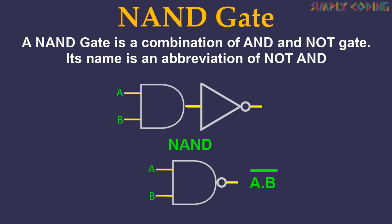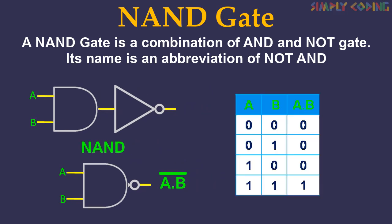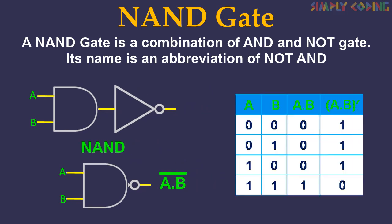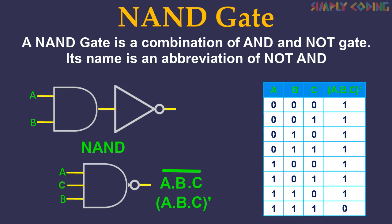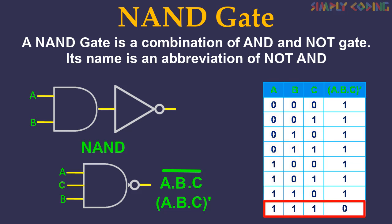You can take a truth table of a two-input AND gate and apply NOT on it to achieve the NAND operation. It is written as (a · b) bar. Similarly, we can draw a three-input truth table. The output of NAND gate is 1 if at least one of its inputs is 0. The output of NAND gate is 0 if all of its inputs are 1.